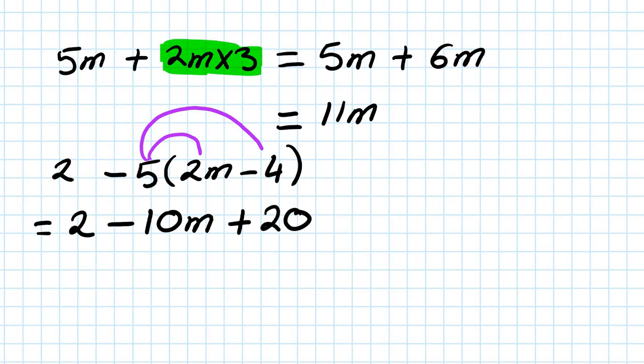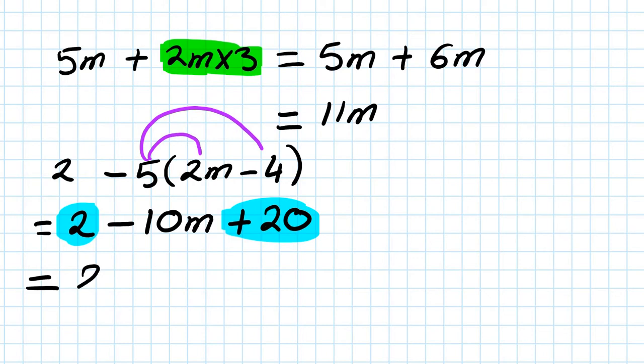If you're not very good with directed numbers, just use your calculator. Now I collect like terms. The like terms are 2 and 20, so 2 plus 20 is 22. So your answer is 22 minus 10m.